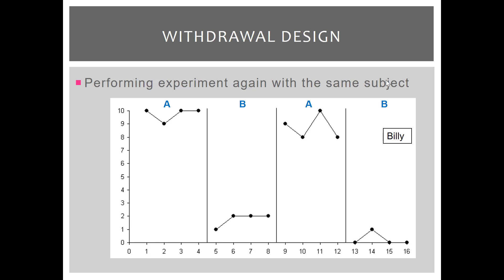Here's a withdrawal design. We've got Billy. In the A condition, his behavior is at a high level. When intervention B is introduced, the behavior drops to a lower level and is fairly stable. When we reintroduce A, we see an abrupt level change in the data path, and we replicate the drop when we reintroduce B. So we've got three demonstrations of effect: A to B, B to A, and A back to B. These three demonstrations allow us to say there's a functional relation. If we want to increase external validity, we can perform this experiment again with the same subject or extend to new participants.